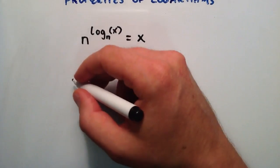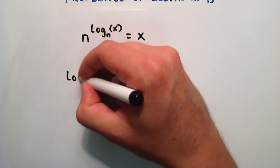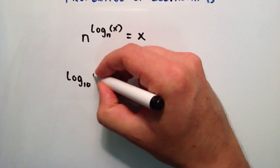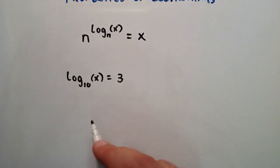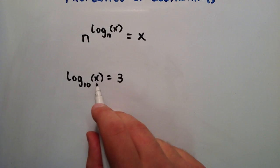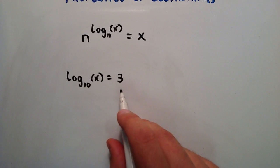So let's say that we have log base 10 of x, and we know that that equals 3. So we want to figure out what does x have to be in order for this statement to be true.